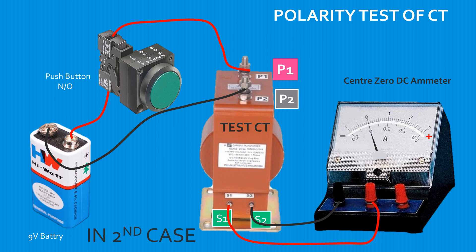If the pointer of the meter deflects to the negative side of the meter scale, then the assumed S1 is actually S2 and vice versa.